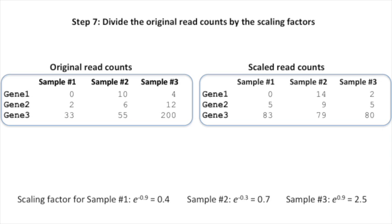And here we have a table of scaled read counts. I've rounded to the nearest read just to make this table easy to look at. We can see that the read counts for sample number one were scaled up and that the read counts for sample number three were scaled down.